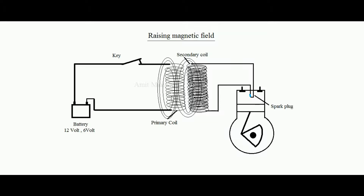Due to Faraday's law of electromagnetic induction, the rate of change of magnetic flux linked to a coil with respect to time develops an EMF. So it will develop an EMF in the secondary coil, which will develop a spark between the electrodes of the spark plug.